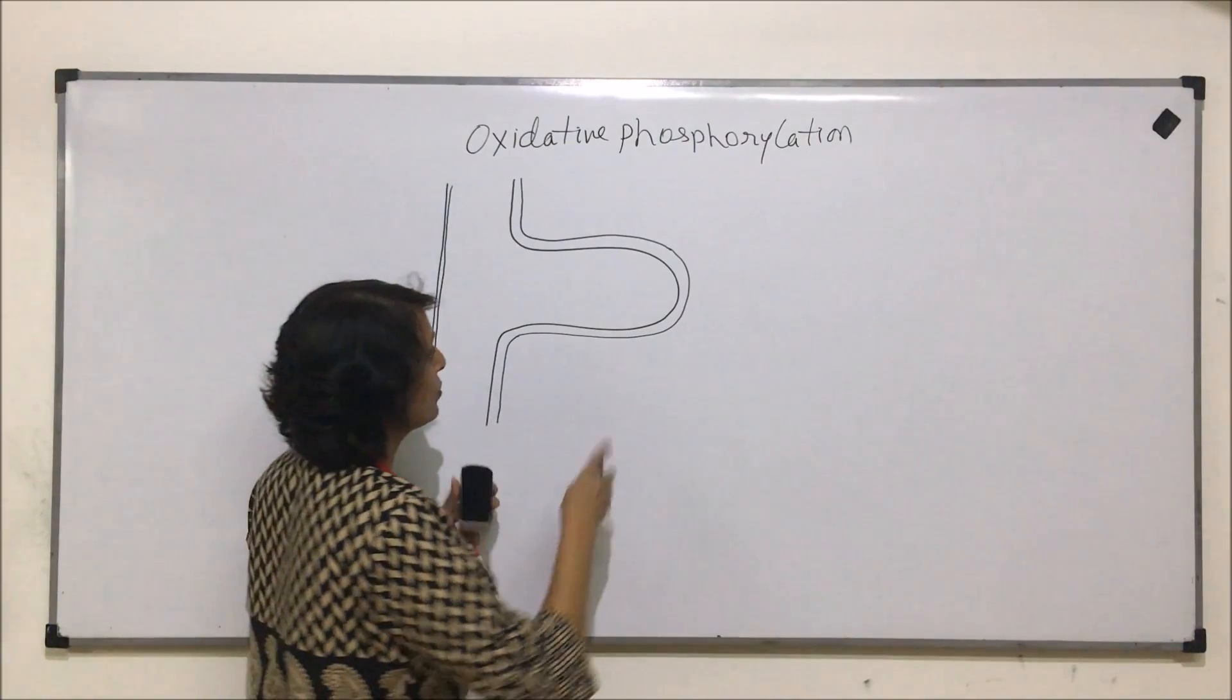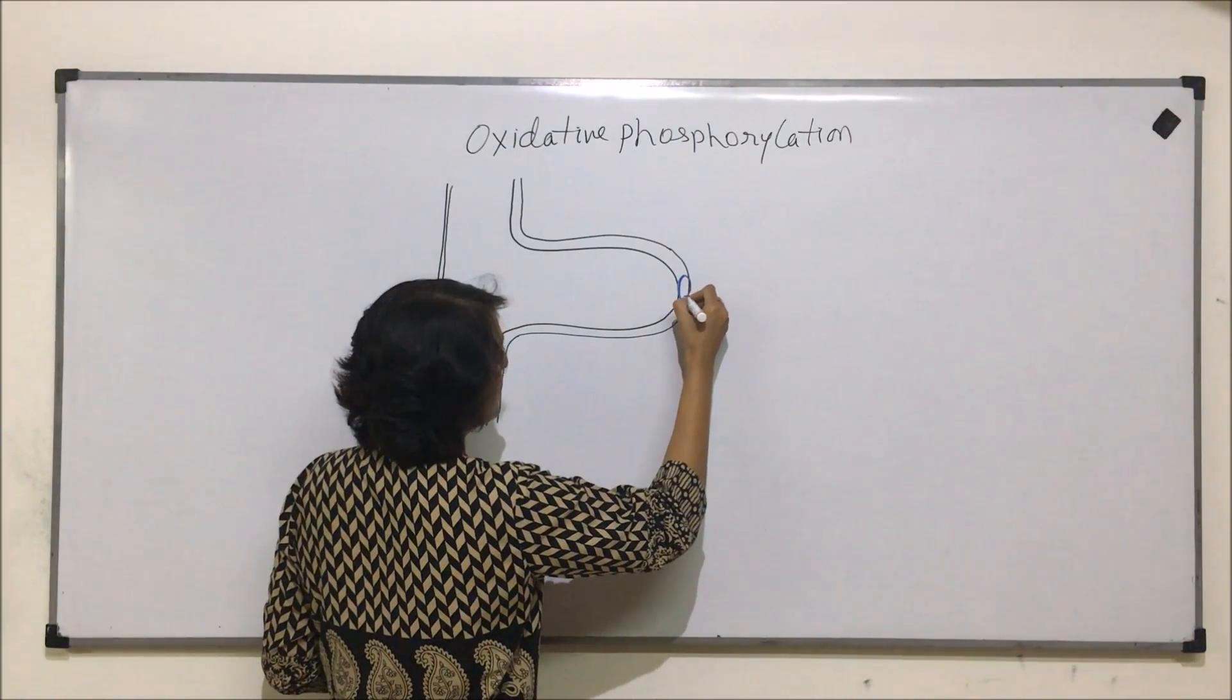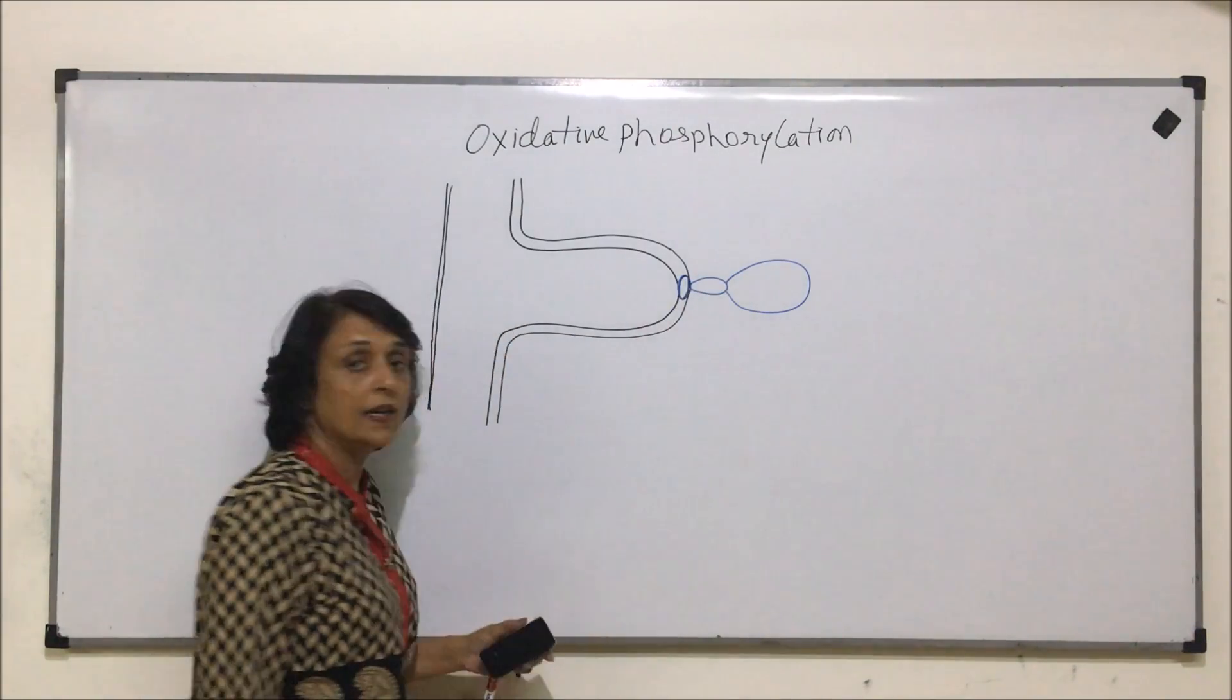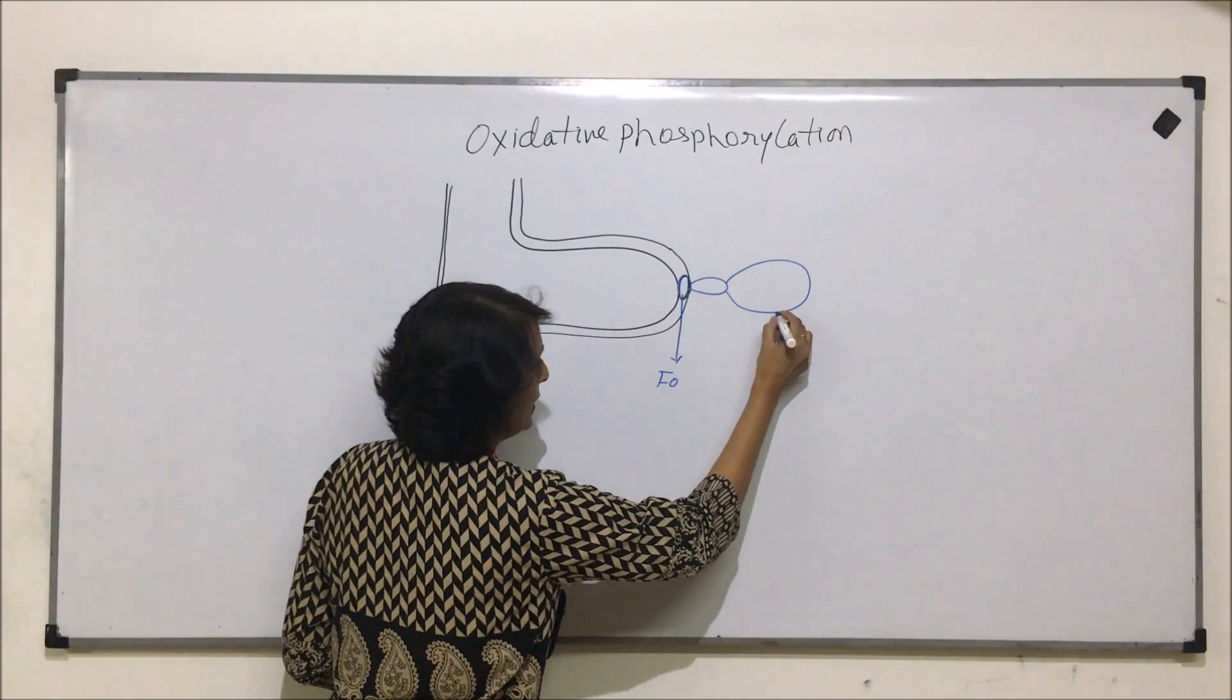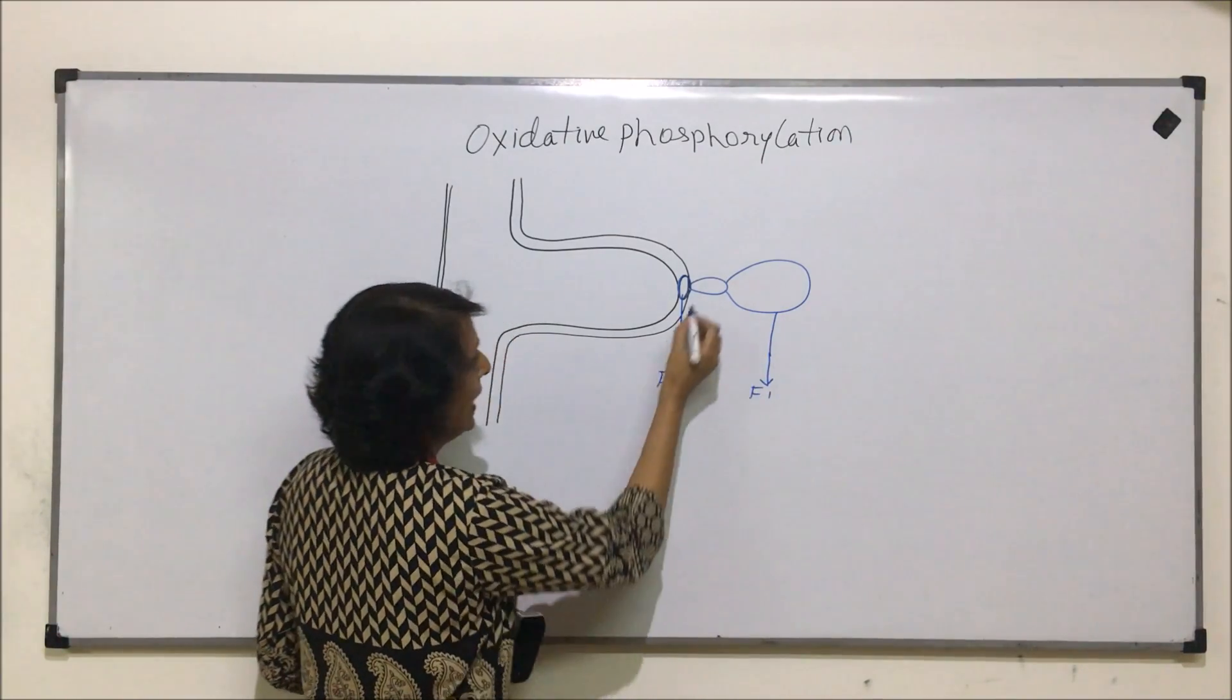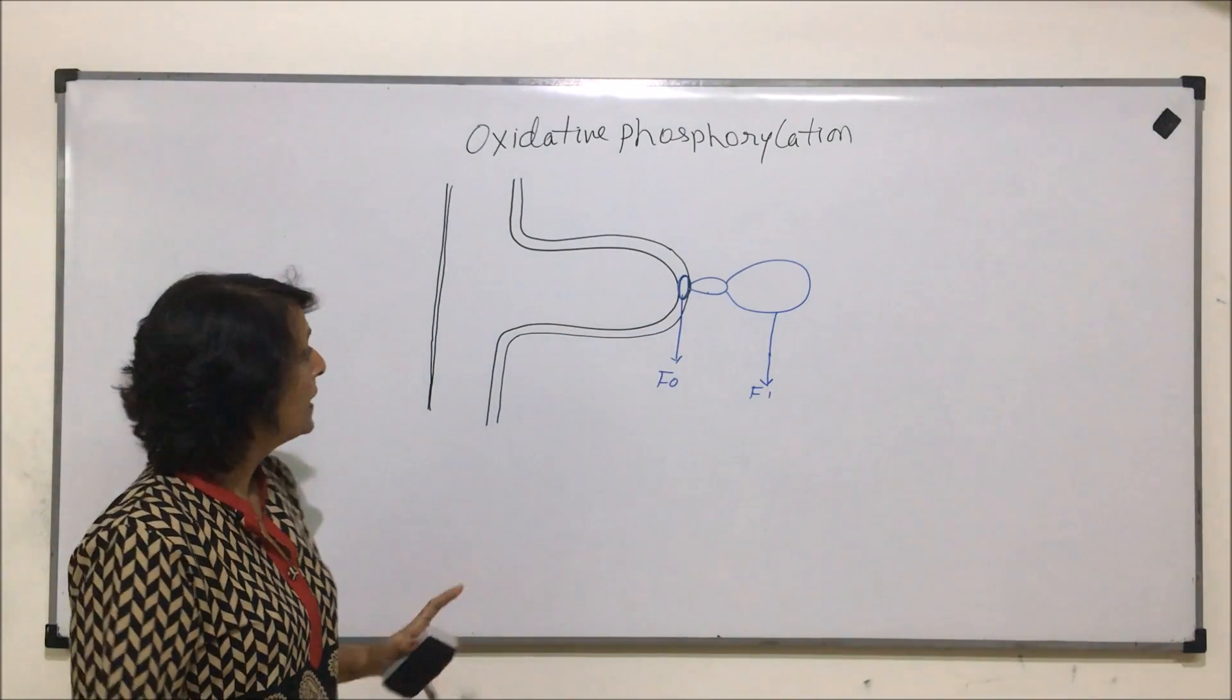And let us also draw the F0, F1 particles so that we can straight away go to the next step also. So these are F0, F1 particles. This is the F0, this is the F1 particle, and this is known as the stalk of the particle.